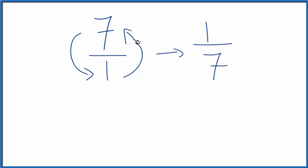We can check our work. We could take the original number, let's call this 7 over 1, and multiply that by 1 over 7. When we do that, if we get 1, then we did the reciprocal correctly.